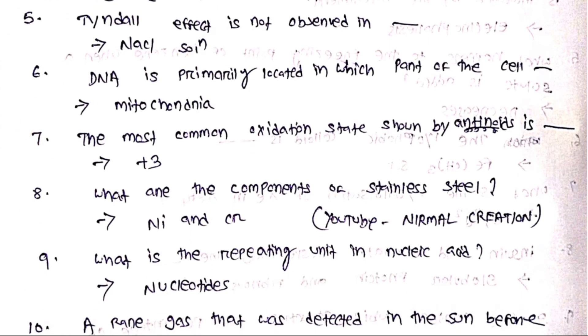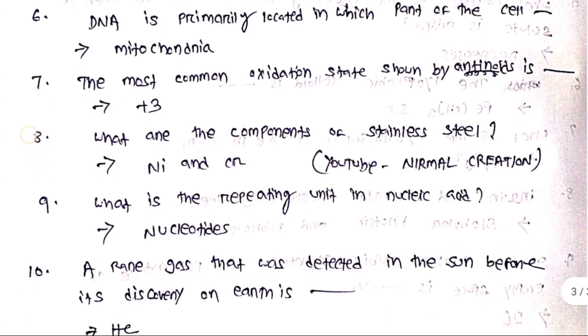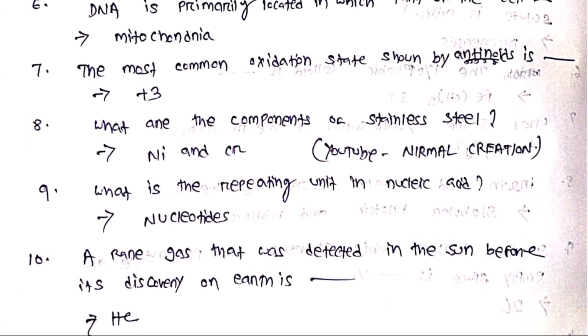DNA is primarily located in which part of the cell? Mitochondria. The most common oxidation state shown by actinoids is +3.